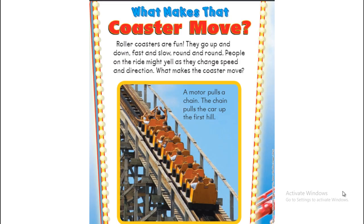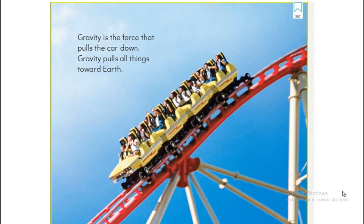What makes a roller coaster move? Roller coasters are fun — they go up and down, fast and slow, round and round. People on the ride might yell as they change speed and direction. To move up the hill, there is a motor that pulls a chain, and the chain pulls the car all the way up to the top. Then when they are at the top, gravity pulls the car back down. Gravity pulls everything towards Earth.